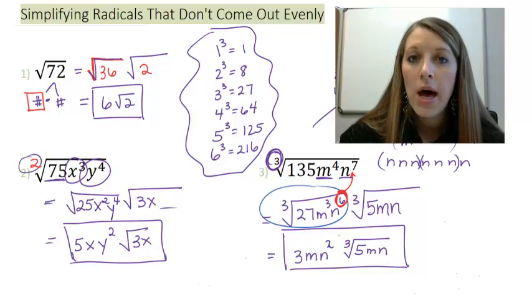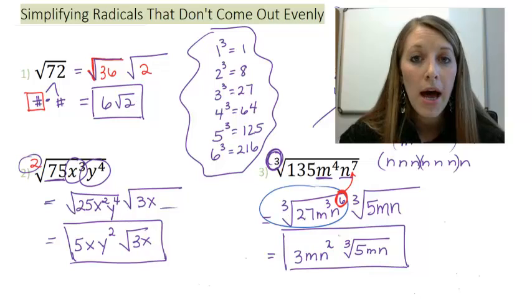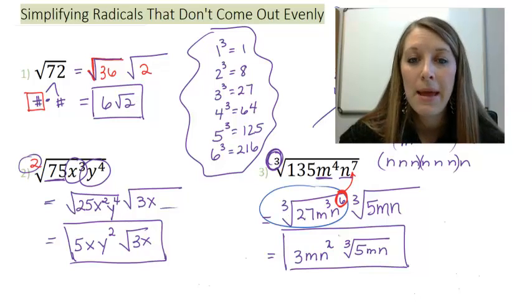So now we know how to simplify roots that don't come out evenly. Using what I call as my good pi, bad pi method.